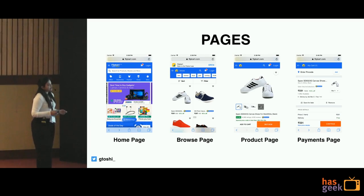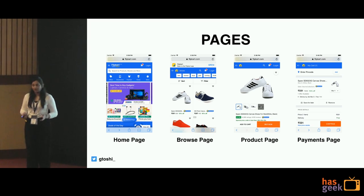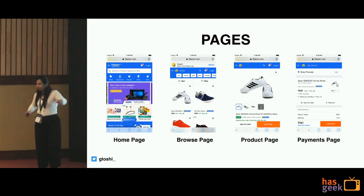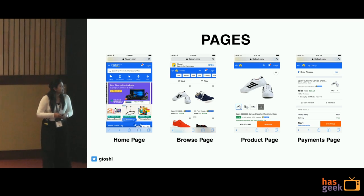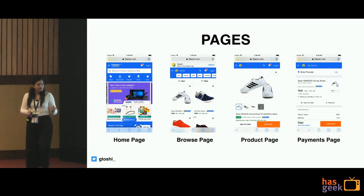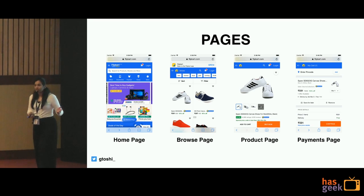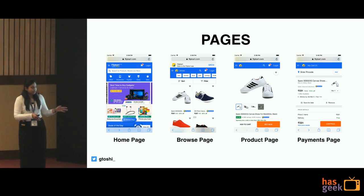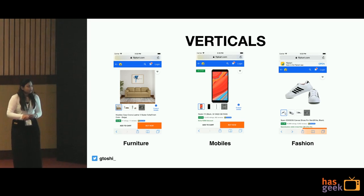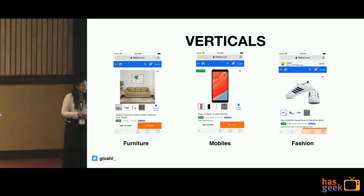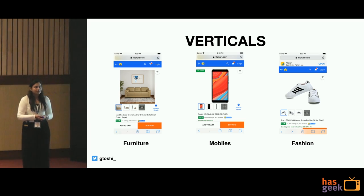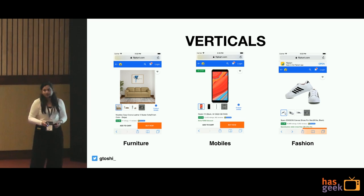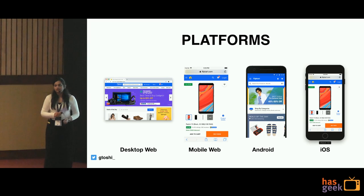We had changes around the pages. We have various pages on the Flipkart application on all platforms — the homepage, the browse page, the product page — and when we launched this program, we had certain changes on all these product pages. These changes were also across the verticals. Flipkart serves hundreds of categories, and we launched Flipkart Grocery as well — so if you are a Plus member, you have various delivery charges exempted. We had changes across these verticals, and all had to be replicated across all platforms.